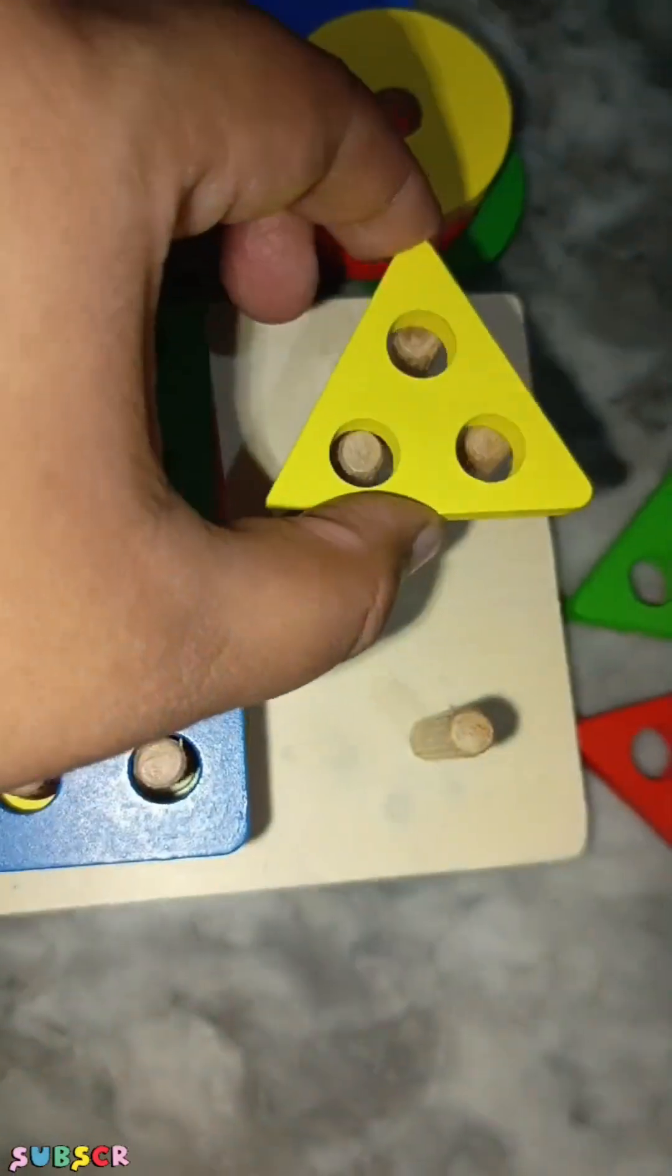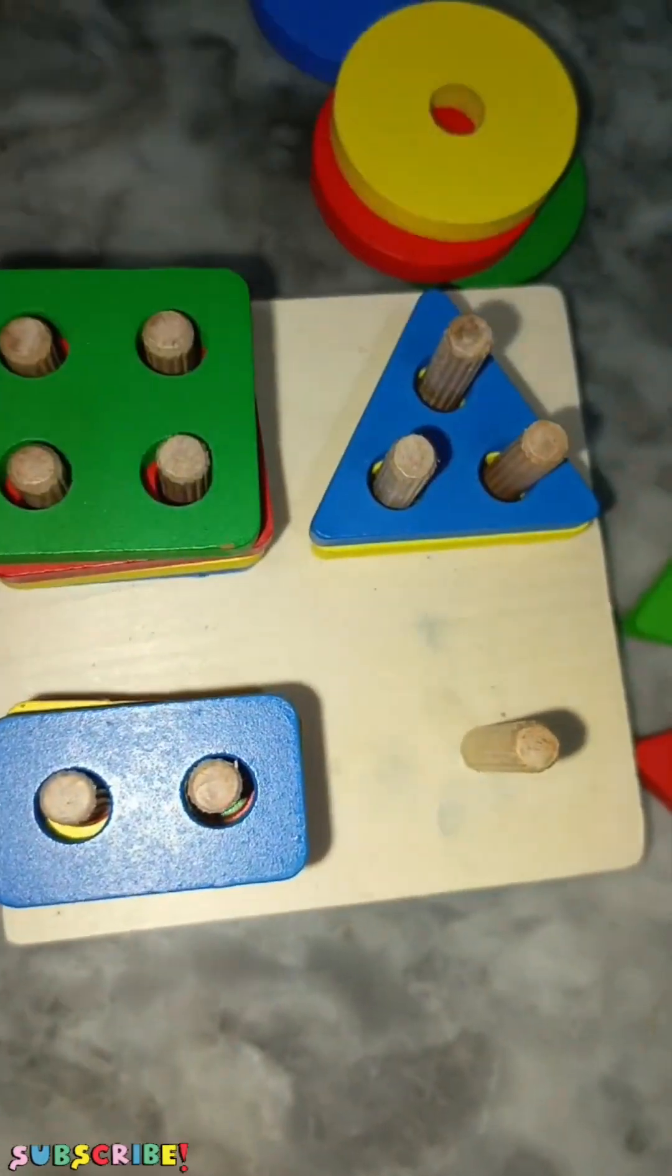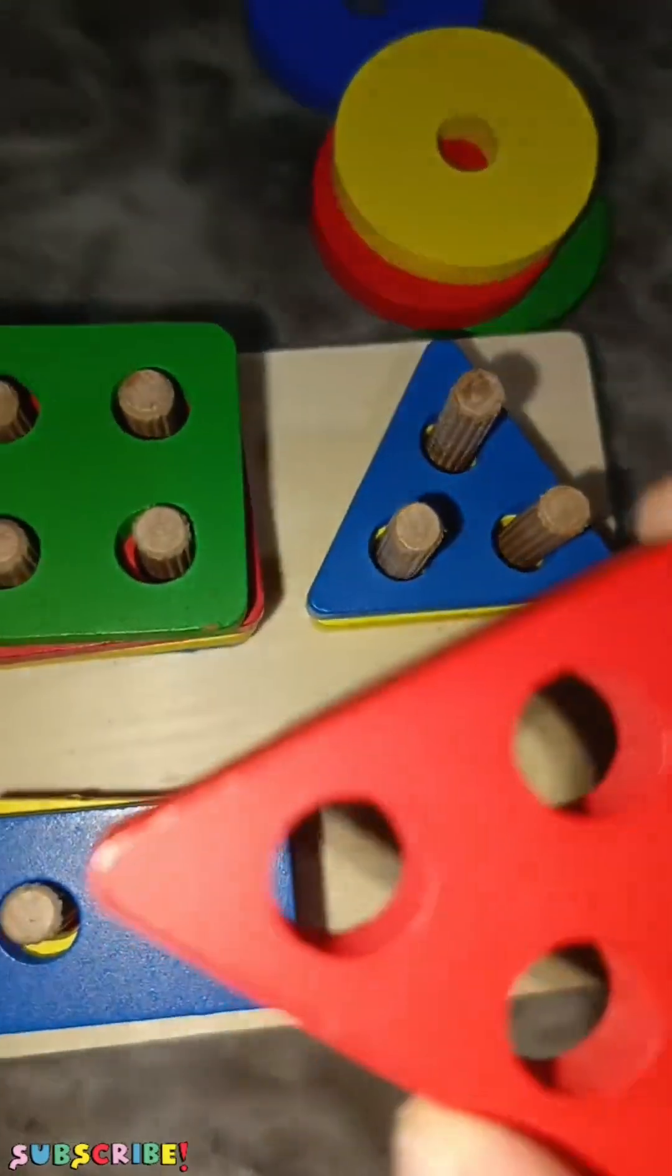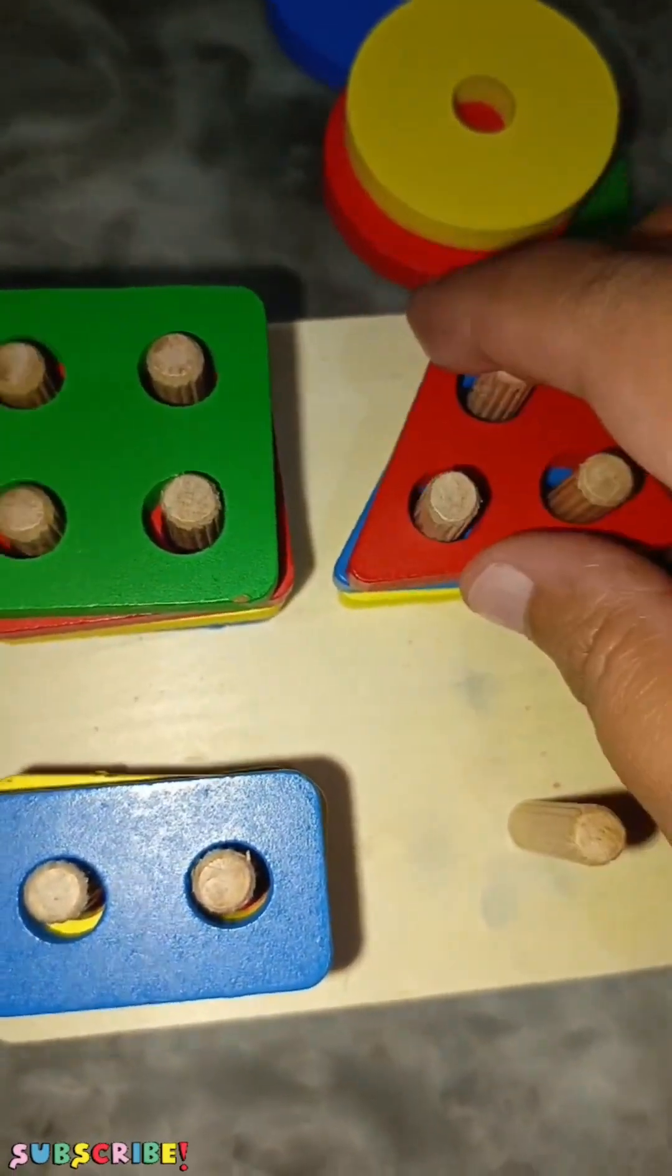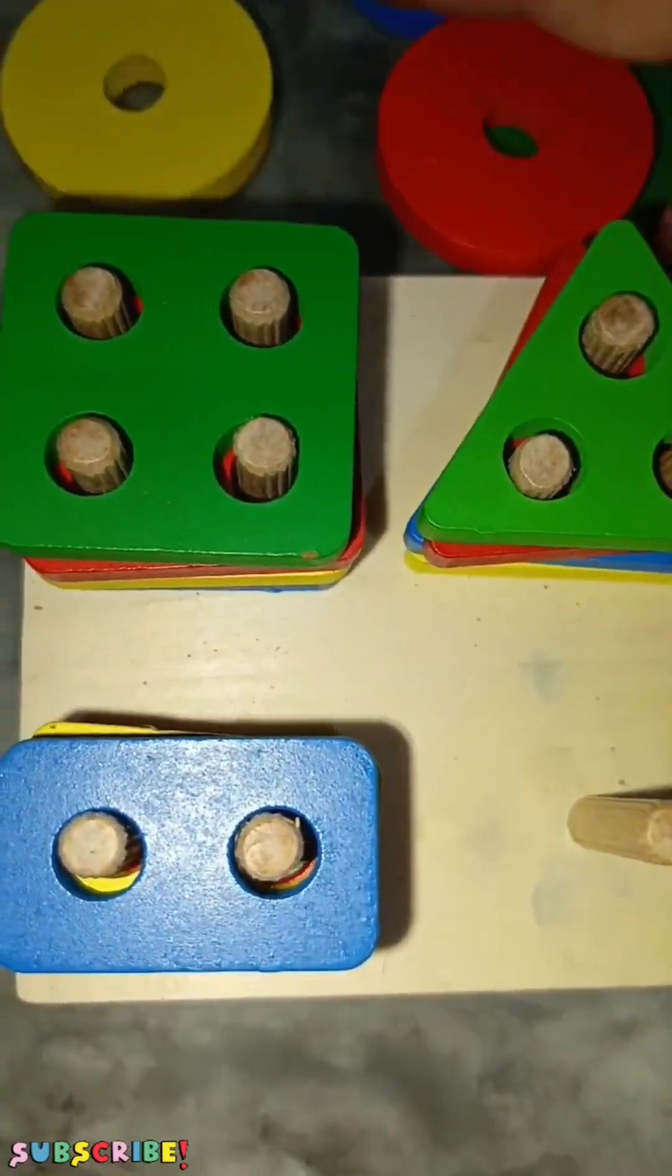Amare paas hai triangle. Yellow. Blue. Red. And green triangle.